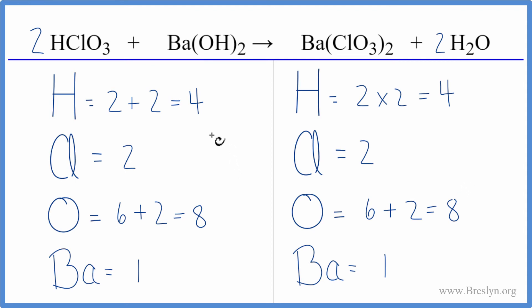The key to this one is really be careful when you're counting up your hydrogens and your oxygens. That's a place people often make errors. This is Dr. V with the balanced equation for chloric acid plus barium hydroxide. Thanks for watching.